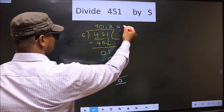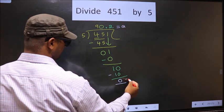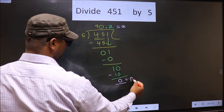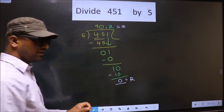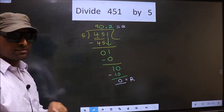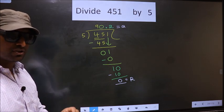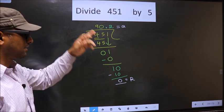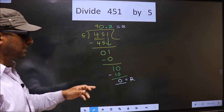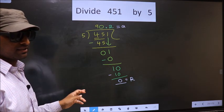So this is our quotient and this is our remainder. Did you understand where the mistake happens? You should not do that mistake.